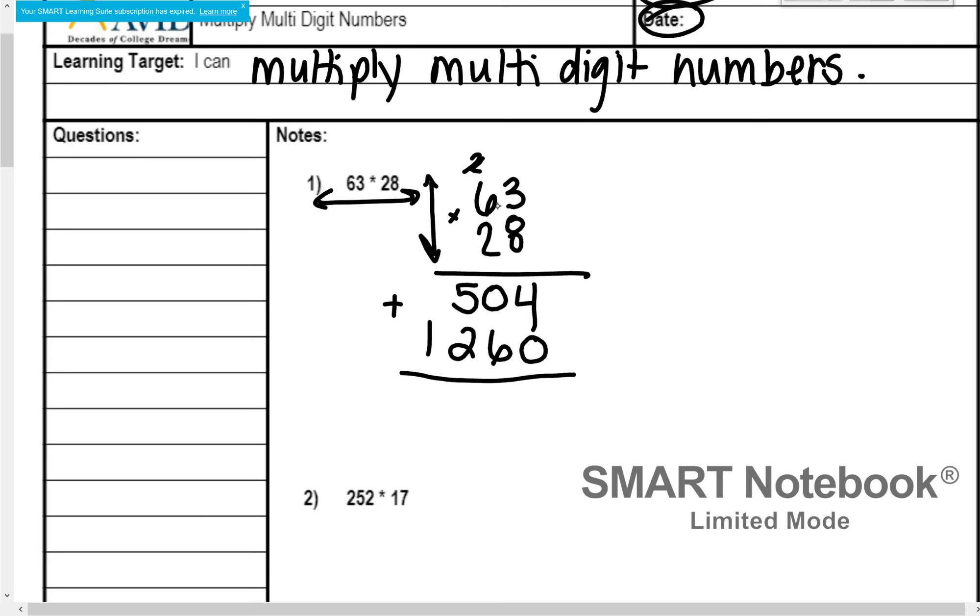My last step, since I am out of digits on the bottom number, I just add them up. So 4 plus 0 is 4. 6 plus 0 is 6. 5 plus 2 is 7. And 1 plus nothing is just 1. Okay, then I just add in my comma, 3 spaces over, comma, and then we're done. Our answer is 1,764.